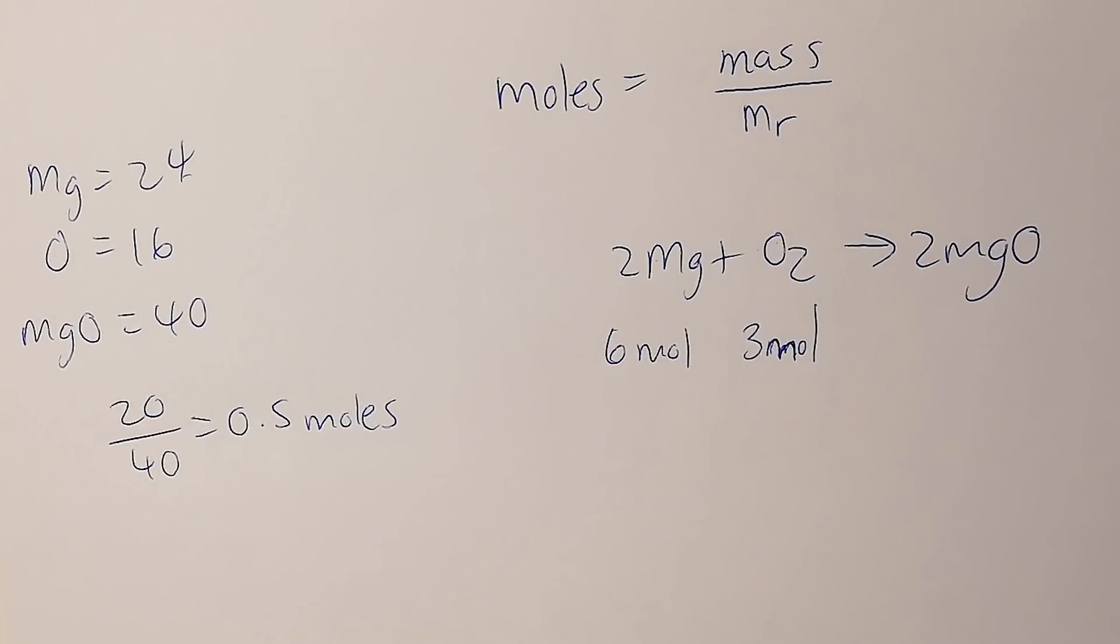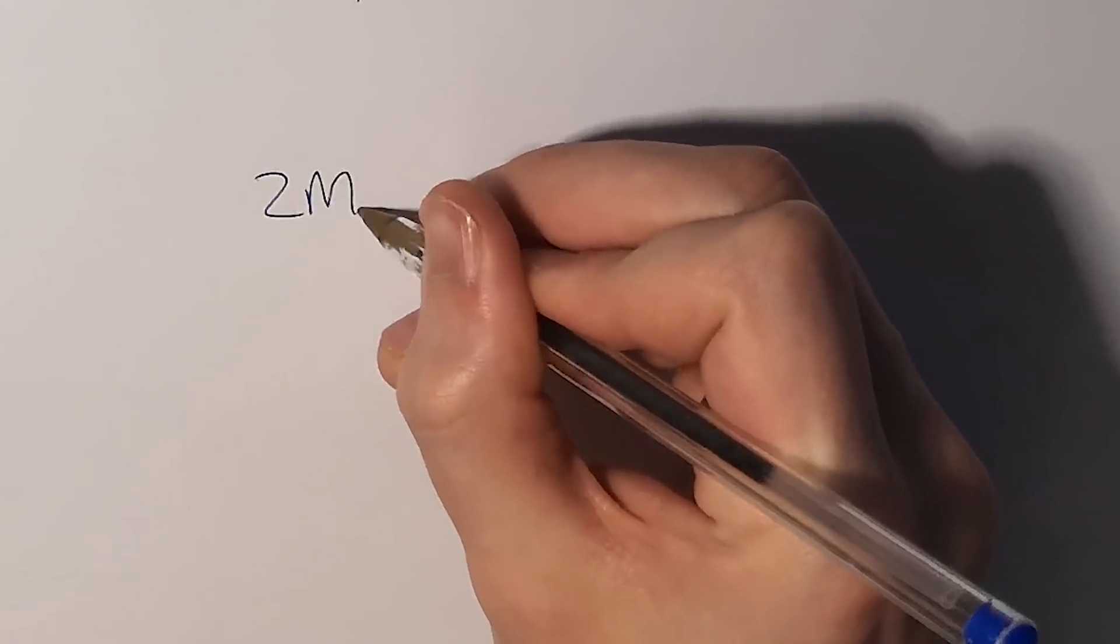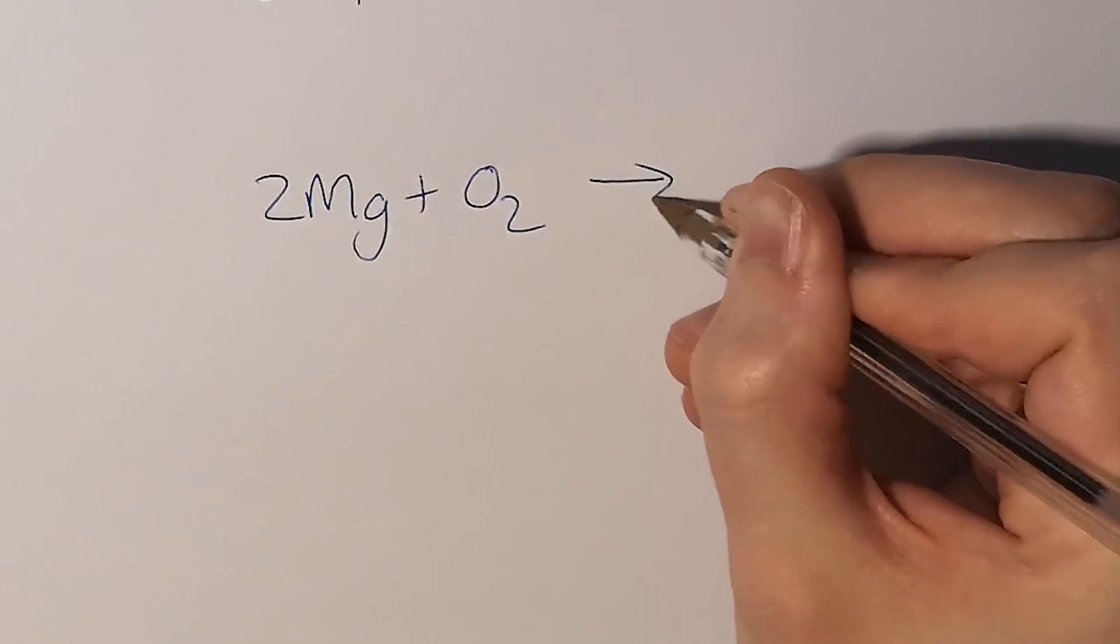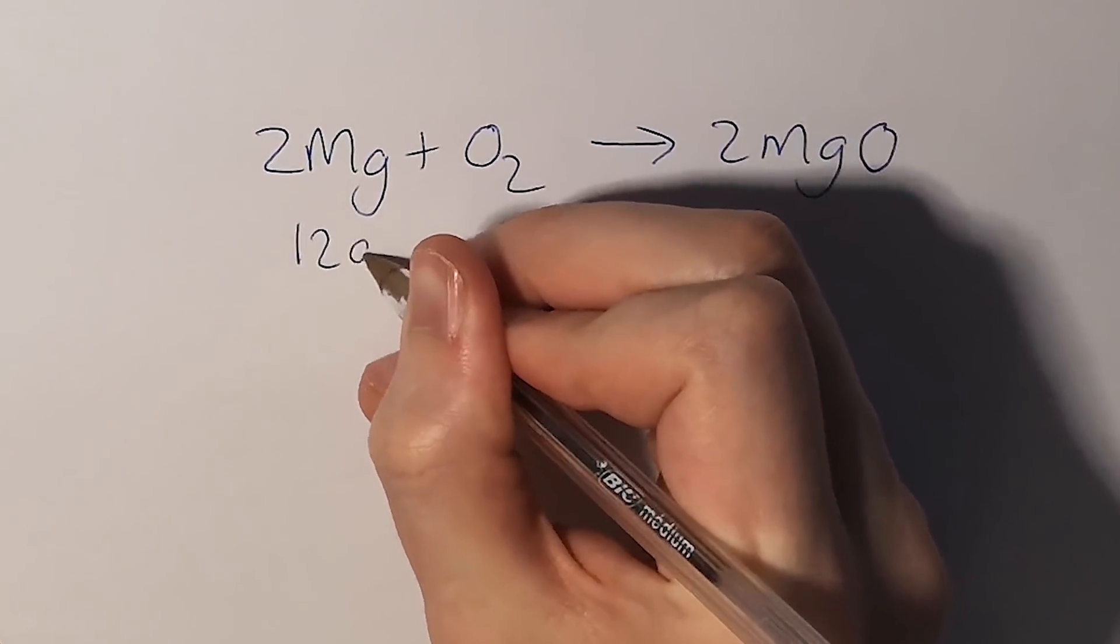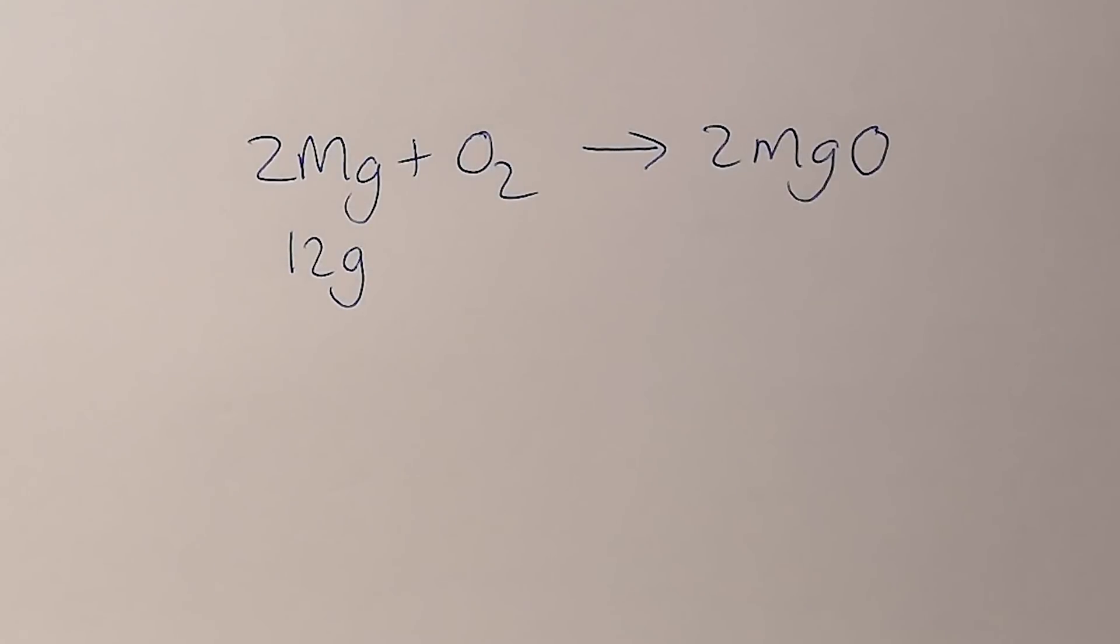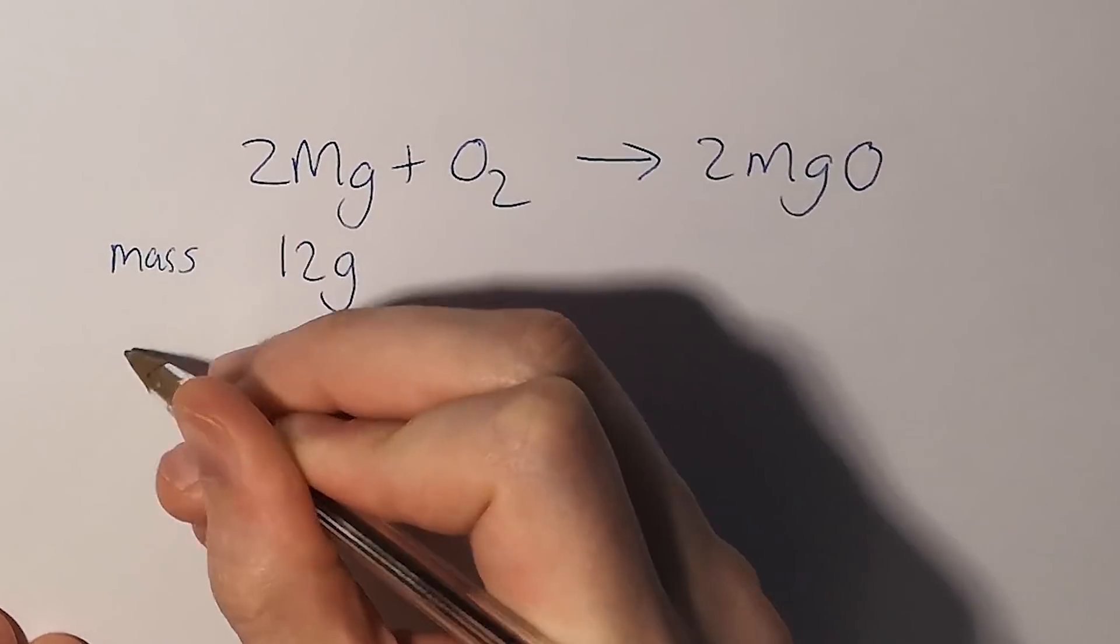A reacting masses calculation takes our chemical equation: what if I start with a certain amount of mass of something, how much mass of a product could I make? The question we're going to look at is: what happens when I burn 12 grams of magnesium and how much mass of magnesium oxide am I going to make? If I start with 12 grams of magnesium, that's my mass, and I write down my Mr here.